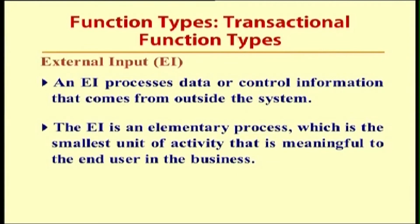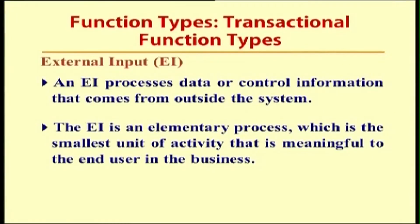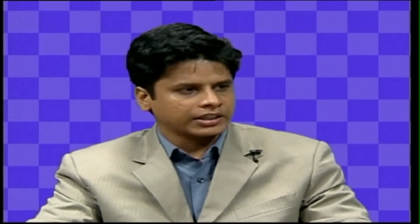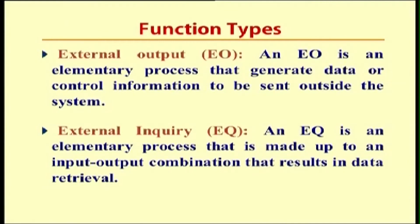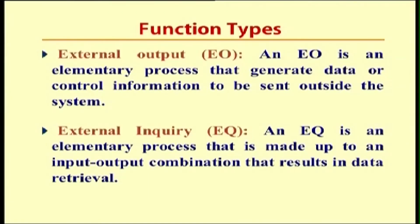The second function type is the transaction function type, which has three values: external input, external output, and inquiries. External input (EI) processes data or control information coming from outside the system — it is an elementary process, the smallest unit of activity meaningful to the end user. External output (EO) is an elementary process that generates data or control information sent out of the system. External inquiry (EQ) is an elementary process made up of an input-output combination that results in data retrieval from the database.